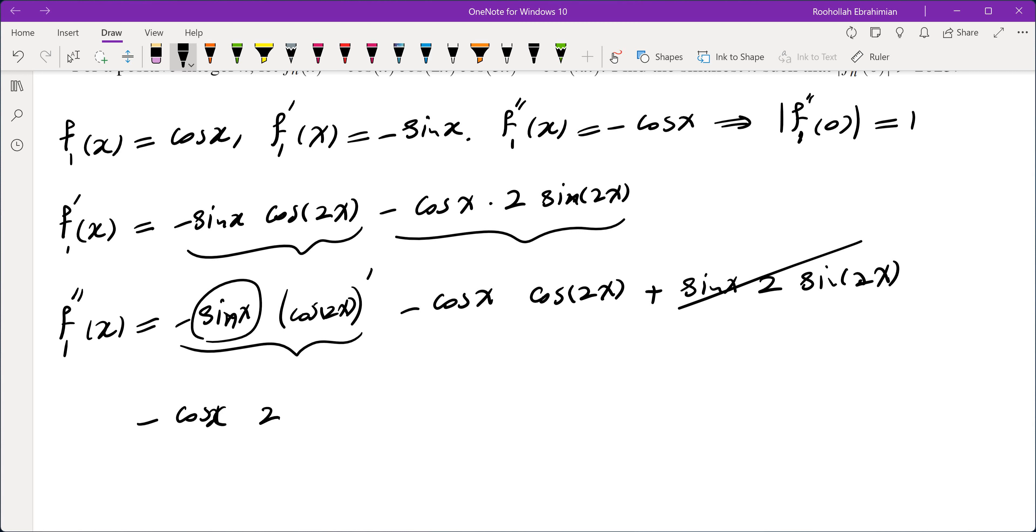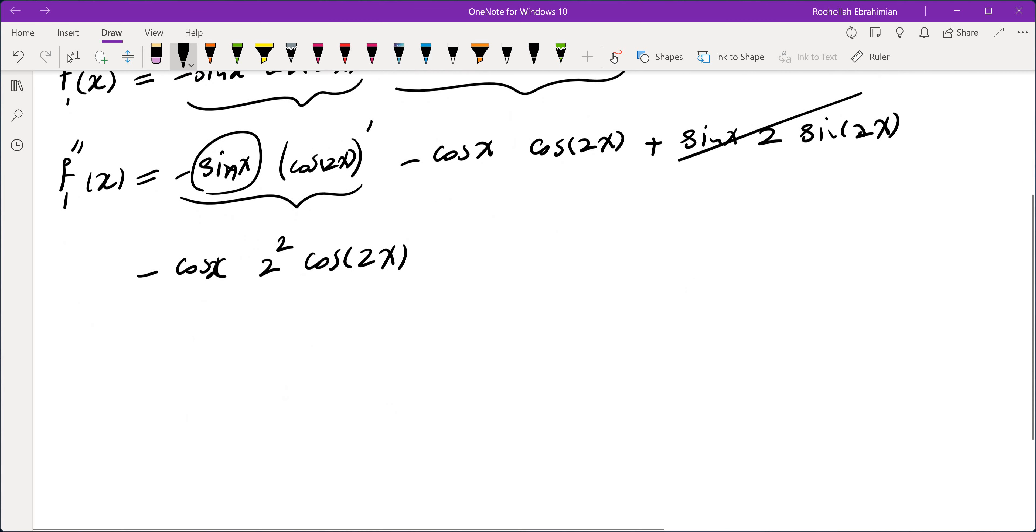This becomes 0, and then we get negative cos(x) times 2 squared cos(2x). So when we plug in 0, f_2''(0) becomes negative 1 minus 2 squared.